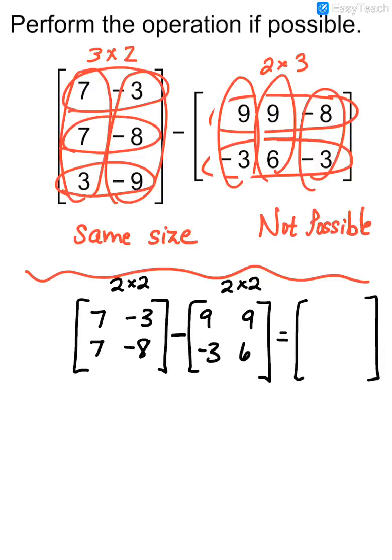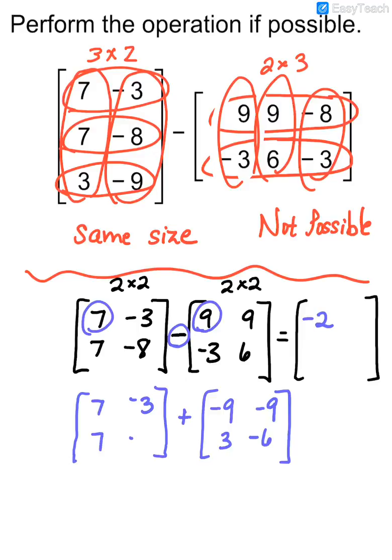Now you can do one of two things. You can either think of subtraction – seven minus nine would be negative two, or if you wanted you could go ahead and on this second matrix you could distribute the negative sign to all of your terms. So then all you have to do is think about addition instead of subtraction. That's totally up to you.